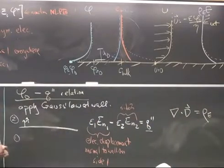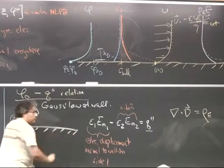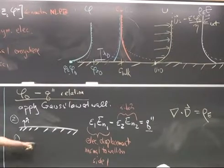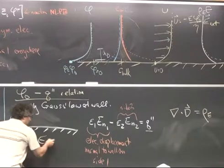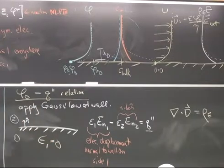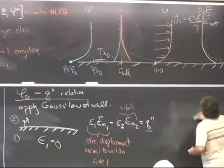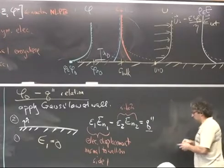Now, if I assume that this interface is the interface between an insulating wall, like a piece of glass I use to make a microfluidic device, or a piece of plastic that I use to make a microfluidic device, everything becomes simpler because the electric field on this side goes to zero. And what that means is that I have a relation between the electric field on side two and the charge density.